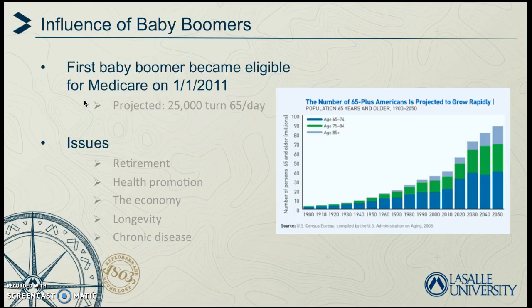Regarding the rising percentage of the elderly, we've heard talk about the influence of the baby boomers. The first baby boomer became eligible for Medicare in January 2011. The term baby boomer came about after World War II ended — more babies were born in 1946 than ever before: 3.4 million, which was 20% more than in 1945, beginning the baby boom. In 1947, there were another 13.8 million babies, and it continued to rise until 1964.